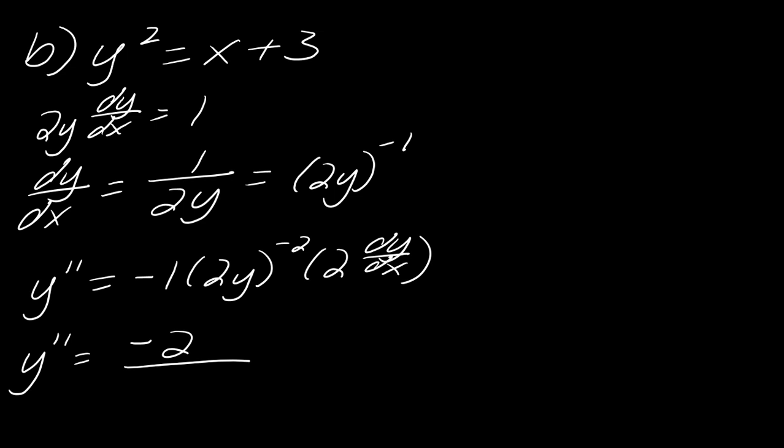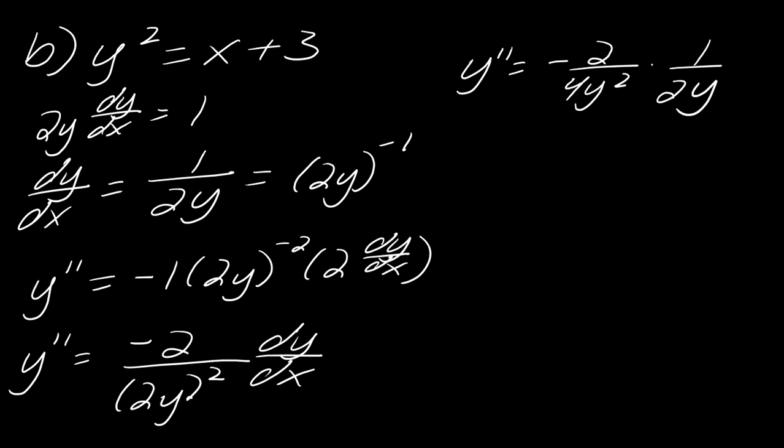negative 2 over 2y squared dy dx. So now I just have to replace this also with my dy dx. So this will be y double prime is negative 2, let's write this out as 4y squared, times 1 over 2y. So this will ultimately simplify to negative 1 over 4y cubed, and so that would be my second derivative in this case.